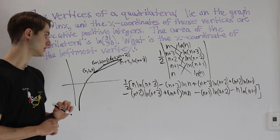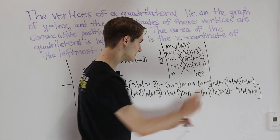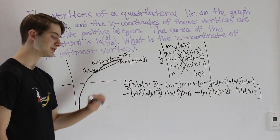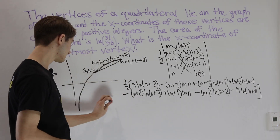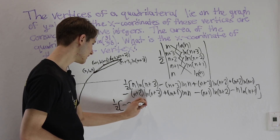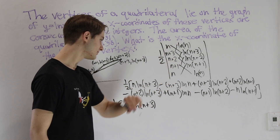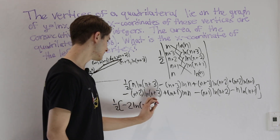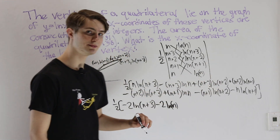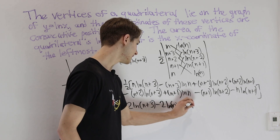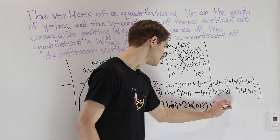Now let's look at the cancellations. Each column has the same natural log multiplied, so we can simplify. For ln(n+3): we have n minus (n+2), giving us one-half times negative 2·ln(n+3). For ln(n): minus (n+3) plus (n+1) gives minus 2·ln(n). For ln(n+2): (n+3) minus (n+1) gives plus 2·ln(n+2). And for ln(n+1): (n+2) minus n gives plus 2·ln(n+1).